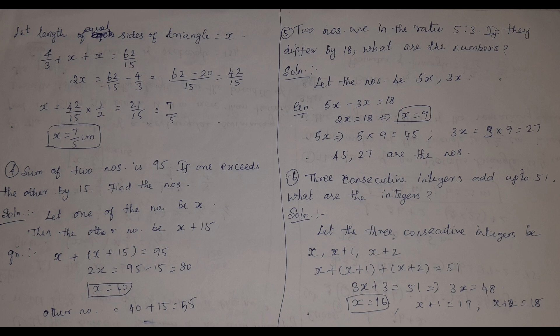Fourth problem: the sum of two numbers is 95. If one exceeds the other by 15, find the numbers. Let one number be x, so the other number is x + 15. Adding them: x + (x + 15) = 95. Solving, x = 40 and the other number is 55.